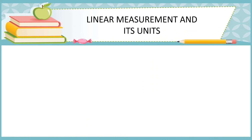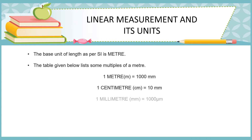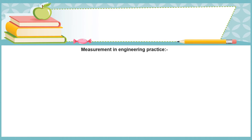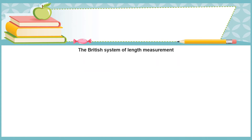Linear measurement and its units. The base unit of length as per SI is the meter. 1 meter equals 1000 millimeters; 1 centimeter equals 10 millimeters; 1 millimeter equals 1000 micrometers; and 1 micrometer equals 0.001 millimeters. In engineering practice, the preferred unit of length measurement is the millimeter.